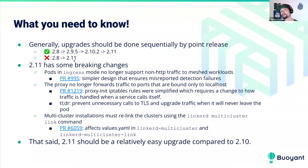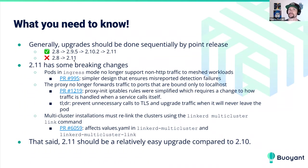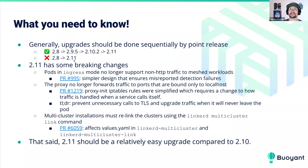First and foremost, when you upgrade Linkerd, you want to do it sequentially by point release. So the example is: if you're at 2.8, you go to 2.9.5, then 2.10.2, then 2.11. We've had folks who upgraded from 2.8 to 2.10, which is not impossible but a little more complex. The general rule: do point upgrades sequentially and your life will be a little bit easier.